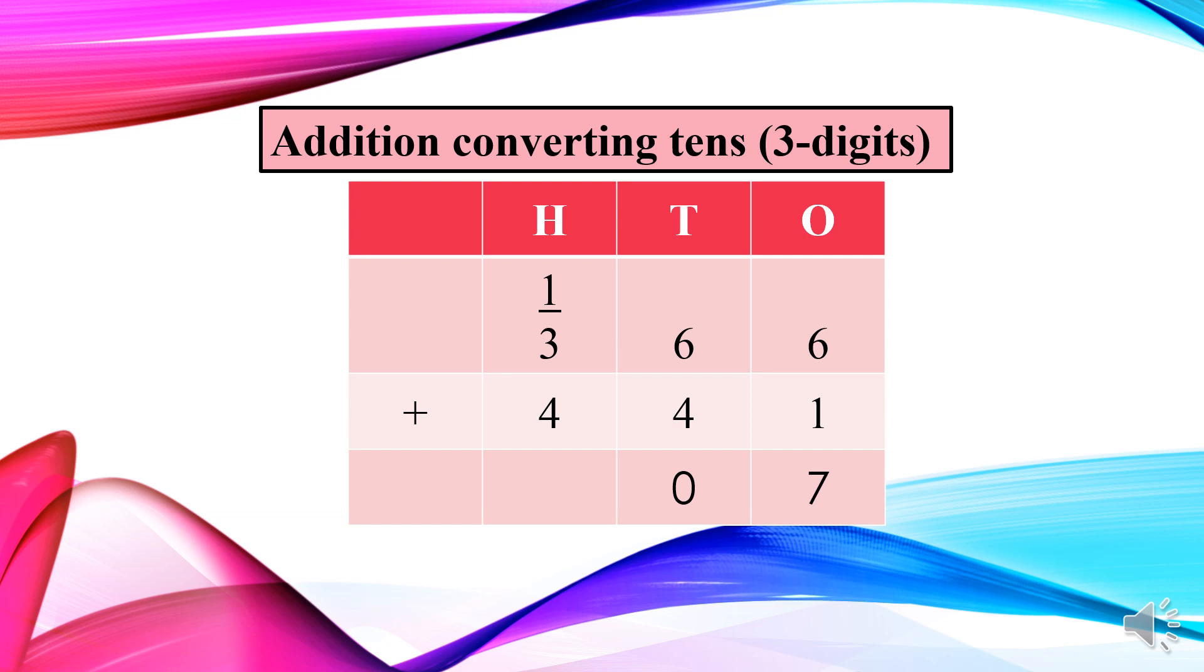Now we will move to hundreds place. At hundreds place, we have four hundreds and three hundreds, right? So firstly, we have to add four and three. After adding four and three, what will we get? We will get seven. But can we write it below? No, because the one from tens place is also converted. Number one bhi to convert hua tha. Now we have to add one also, right? So after adding one in seven, what will we get? Yes, we will get eight.